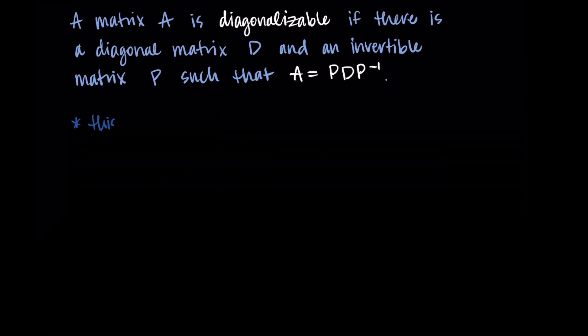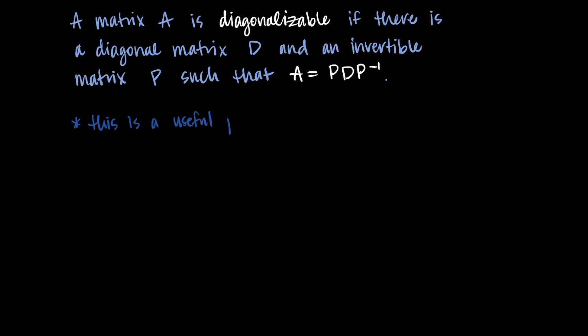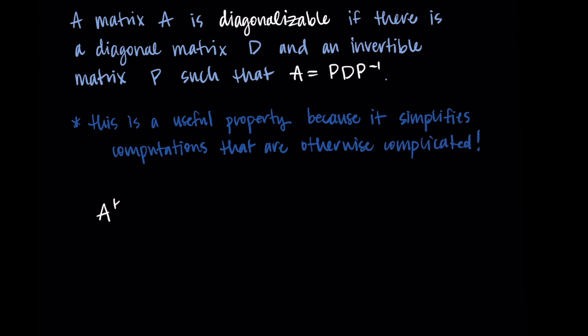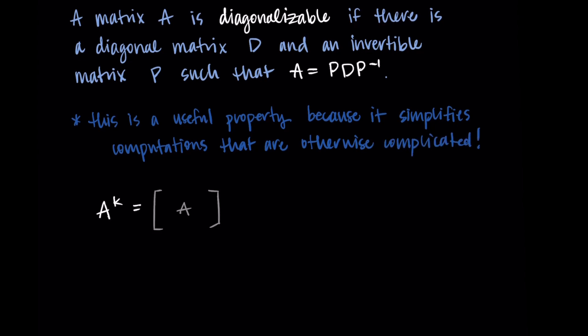Why do we care about being able to diagonalize a matrix and write it in this way? This is especially powerful because it simplifies some other computations that would normally be really complicated. One example of this is suppose we take the matrix A and we want to raise it to the kth power, so we're taking k copies of the matrix A and multiplying them together.